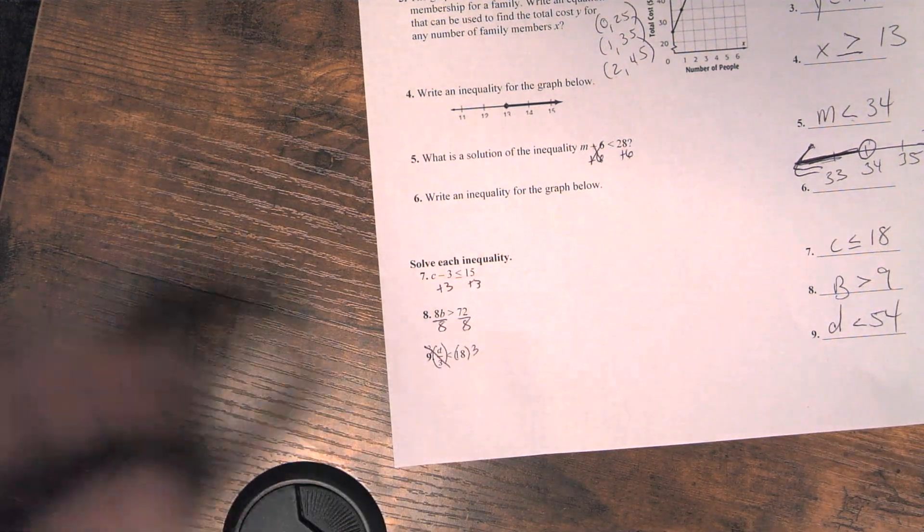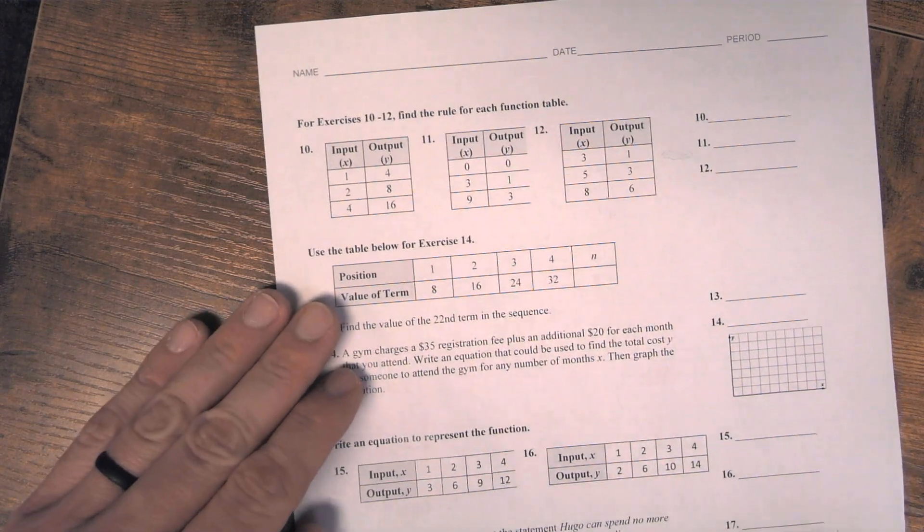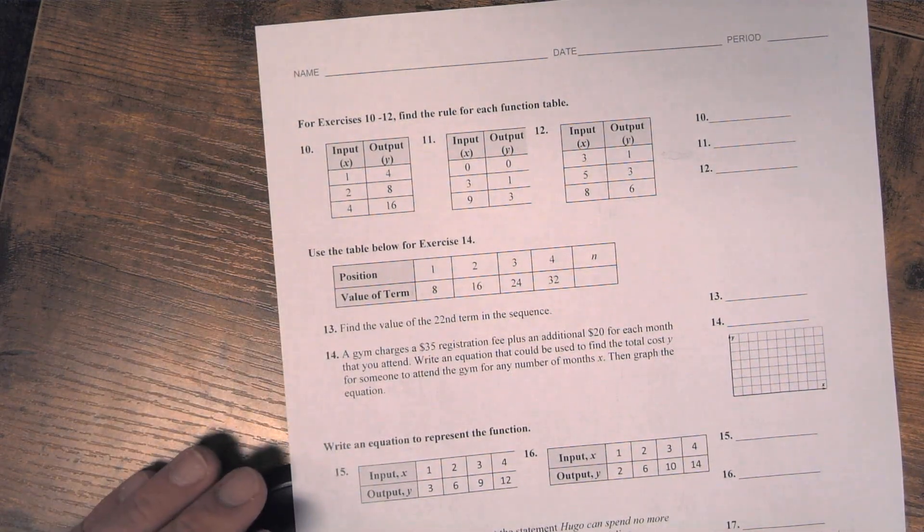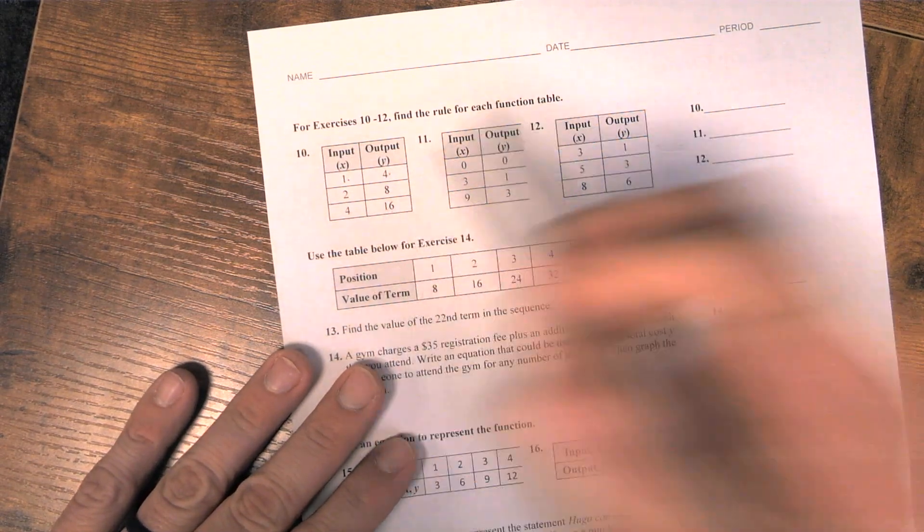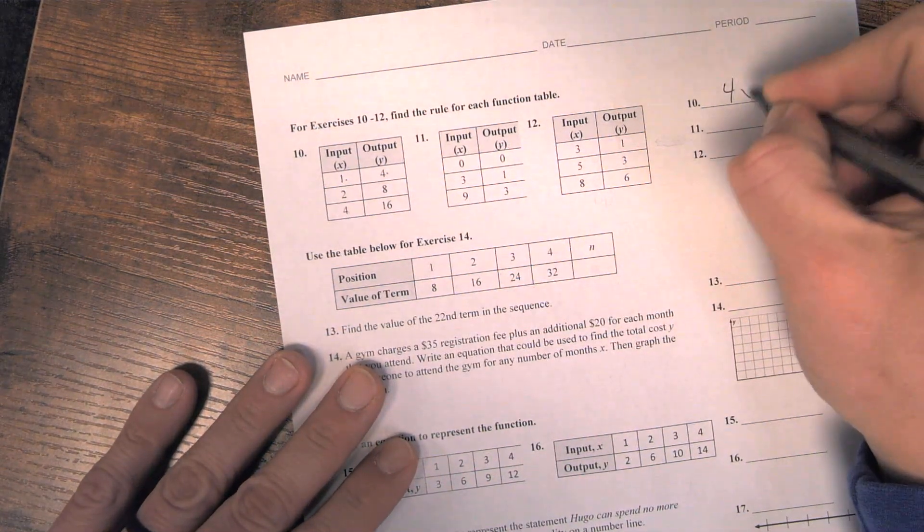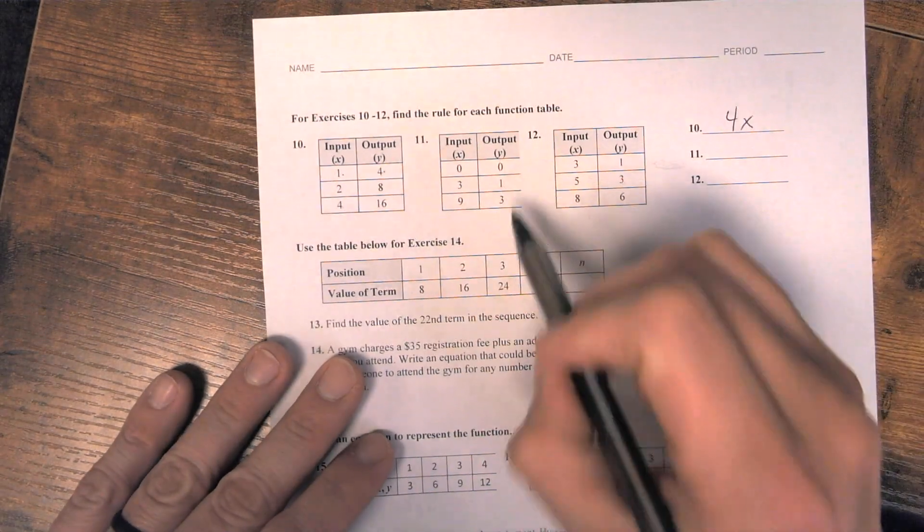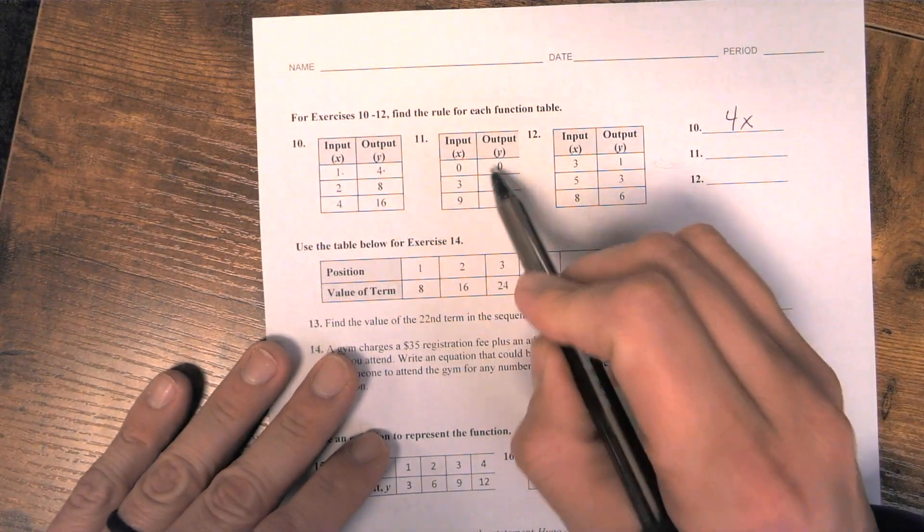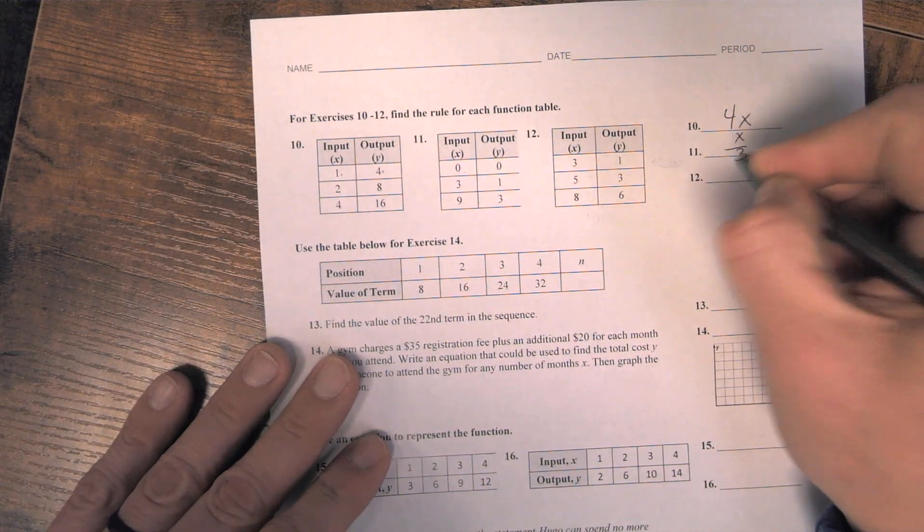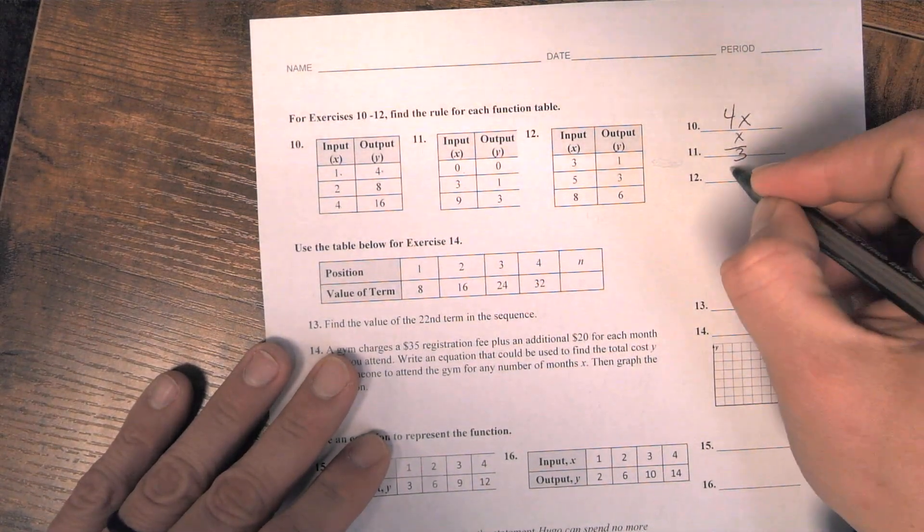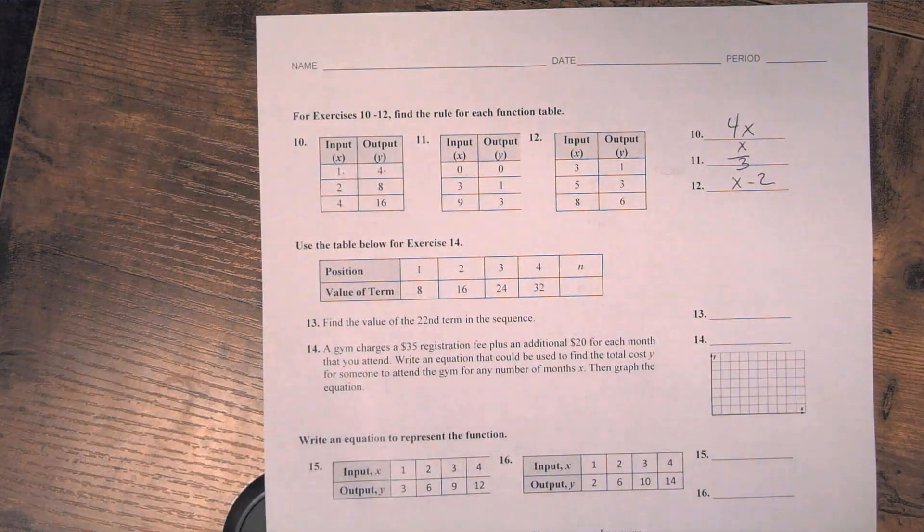On the back, 10, 11, and 12, you're finding the function rule of each function table. So they're going from 1 to 4, 2 to 8, 4 to 16. They are multiplying by 4, 4x. Number 11, 0 to 0, 3 to 1, 9 to 3. They are dividing by 3. And then the last one, they are subtracting by 2, x minus 2.